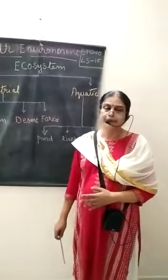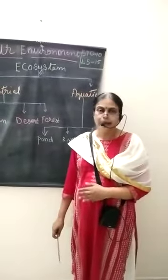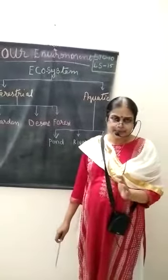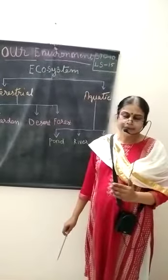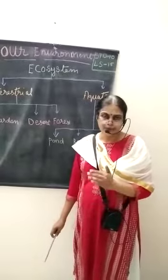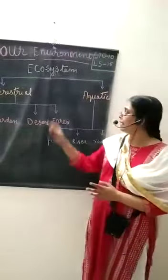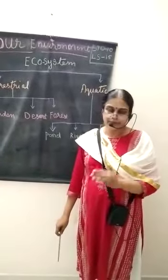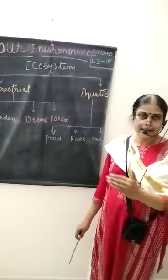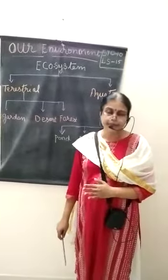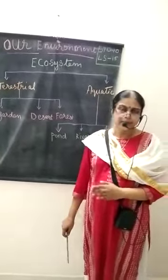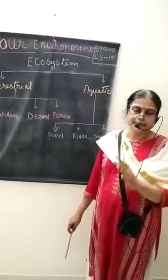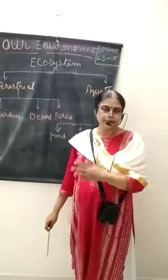Many living organisms are living in this environment, and the non-living factors are also interacting with these living organisms. This combination of living organisms and non-living factors together is called an ecosystem. The components of an ecosystem are classified into two: biotic and abiotic components. Biotic components means all the living organisms living in this environment.